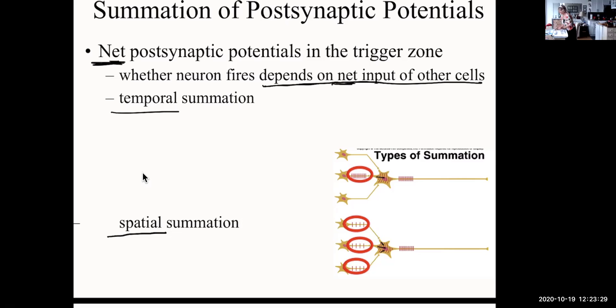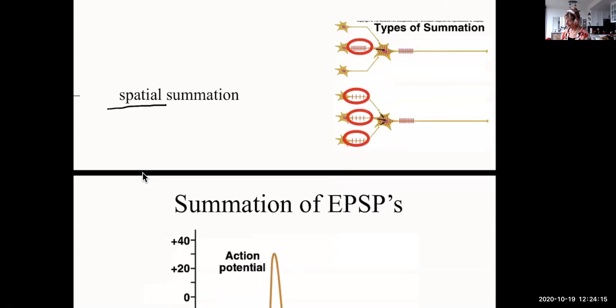Spatial summation is such that here are potentials coming in from two different areas at the same time. And that might be enough to bring the potentials up to threshold. Does that make sense? The temporal and spatial summations.